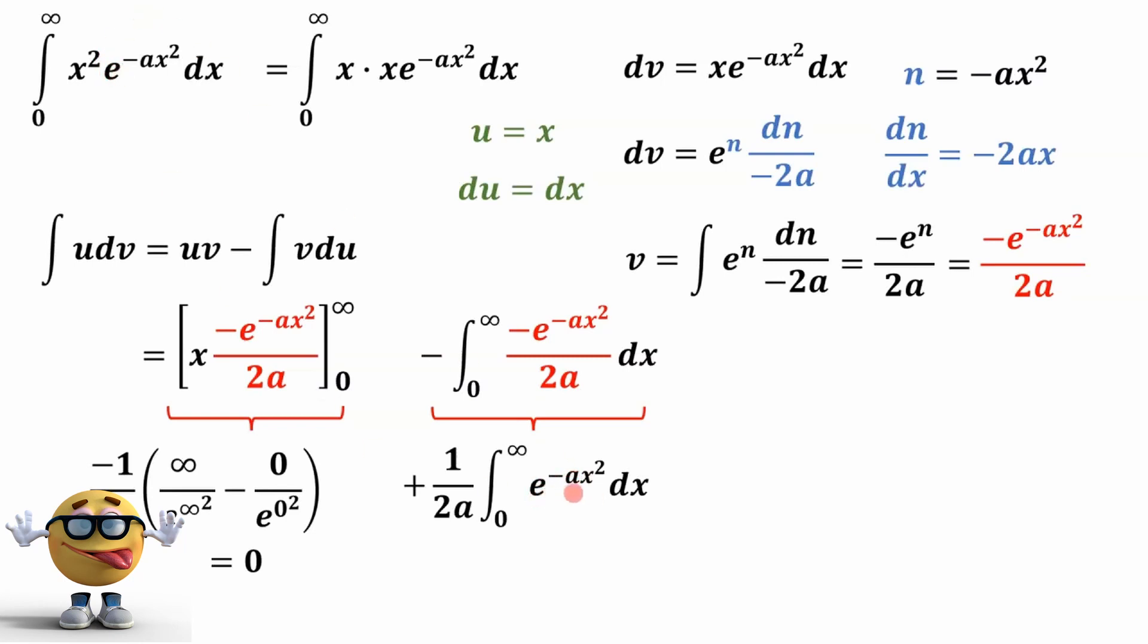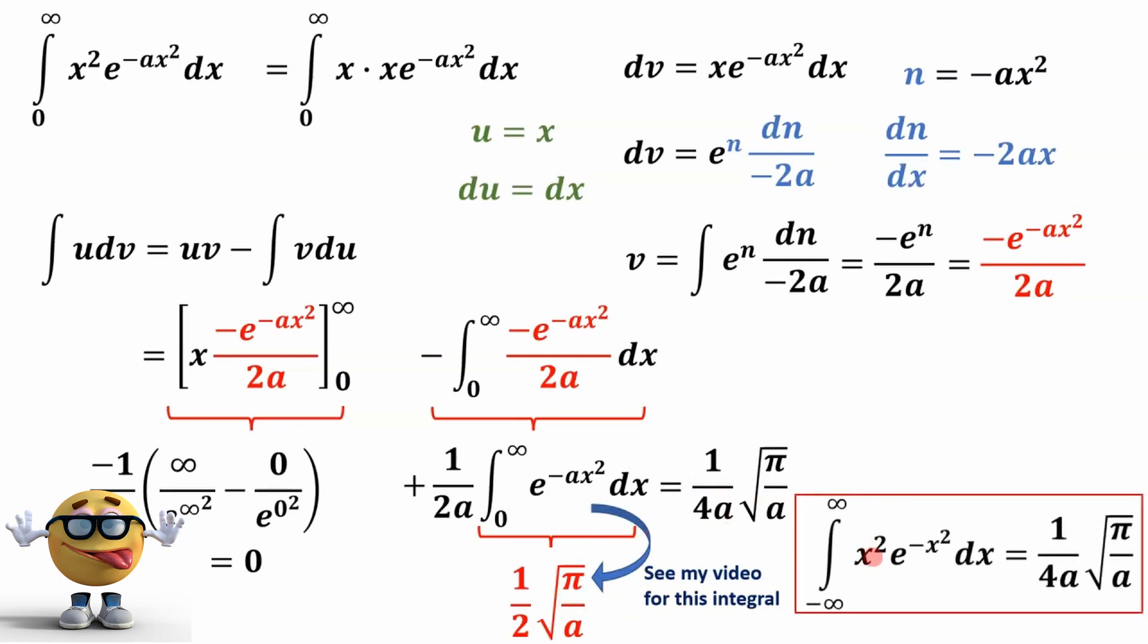But it does take a little bit of time to evaluate. And I did this in another video. So I'm just going to tell you that this integral is 1 half root pi over a. If you want to see it, check out my video because I went in detail on how to evaluate this. This whole term becomes 1 over 4a because 1 half and 1 over 2a multiplied together is 1 over 4a. And then the root pi over a is right here. So the integral of x squared e to the negative ax squared dx from 0 to infinity is 1 over 4a times the square root of pi over a.